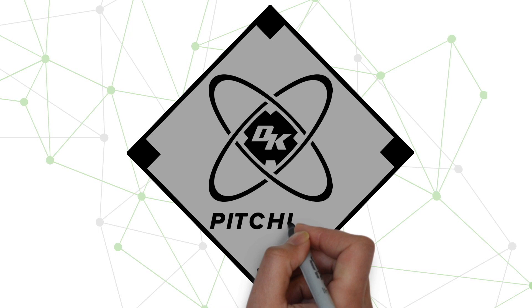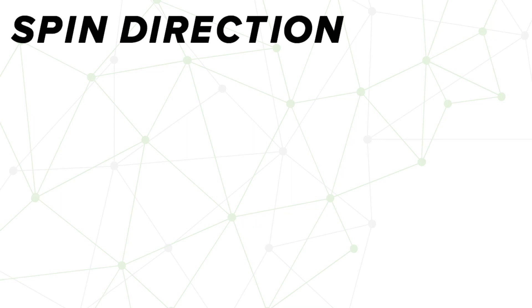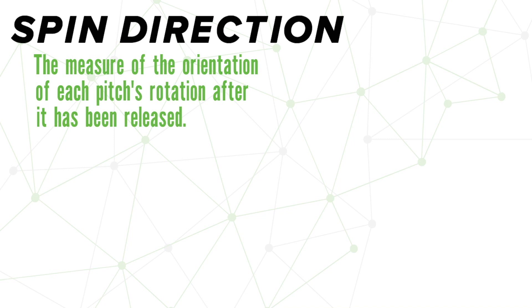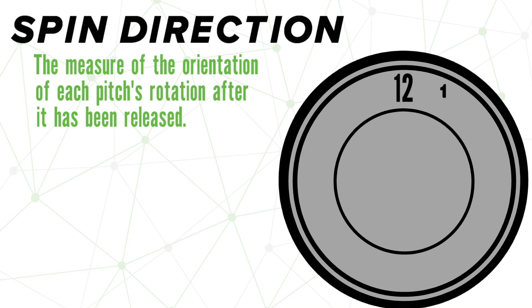Welcome to the Diamond Kinetics Pitching Series. In this video, we will be covering all of the basic information you need to know in order to understand spin direction. Spin direction is the measure of the orientation of each pitch's rotation after it has been released — that's a fancy way of saying spin direction simply describes how each pitch spins.